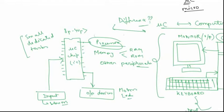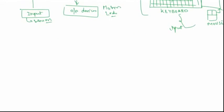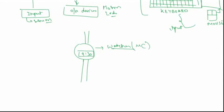For example, you must have seen a digital watch that displays your time in digits. Those kinds of watches run using a microcontroller. The microcontroller has only one task: just to keep a record of the time. It doesn't need to do video processing or audio processing — only one type of task is run by this microcontroller. These are the kinds of places where microcontrollers are used, because the size of their processor, memory, and peripherals are limited.